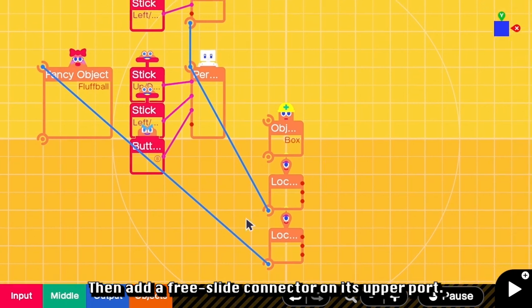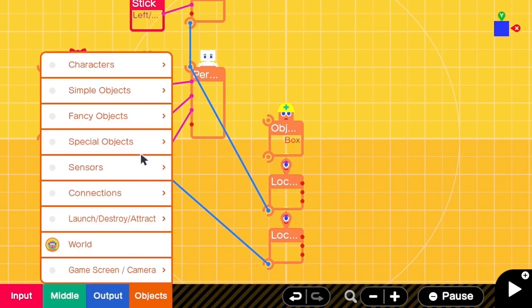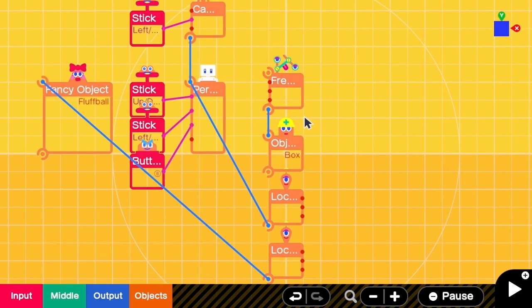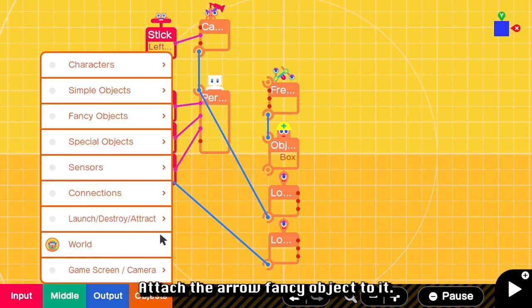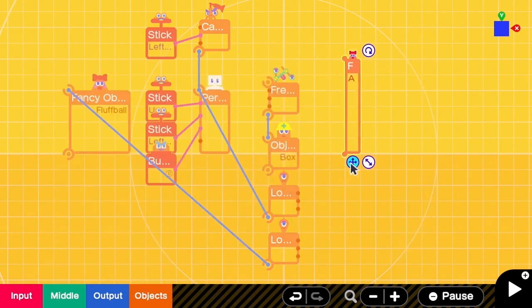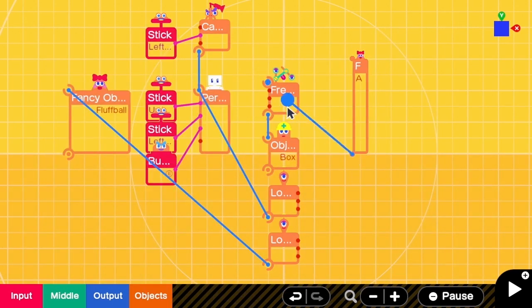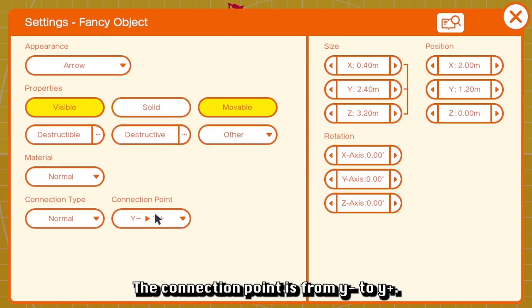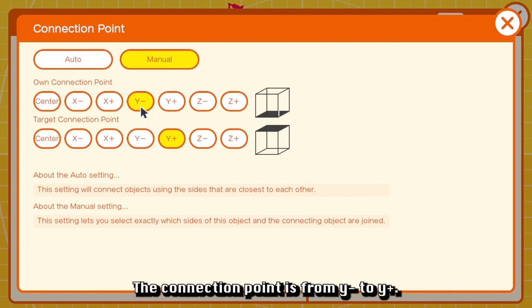Then add a free slide connector on its upper part. Attach the arrow fancy object to it. Go to the settings and make sure that it is visible and movable. The connection point is from Y negative to Y positive.